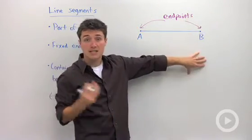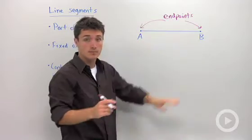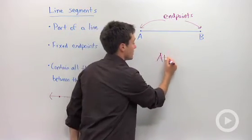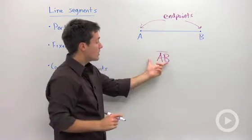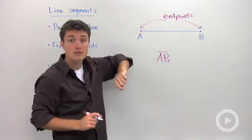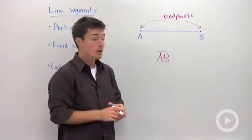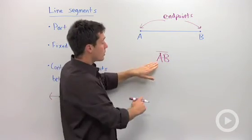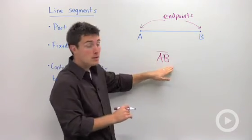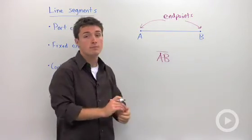And the endpoints are important because that's how we label this line segment. So we're going to call this line segment AB. And notice that I drew a little line on top of A and B with no arrows, which tell you, the geometry student, that this is a line segment AB that only goes from point A to point B and contains all the points in between.